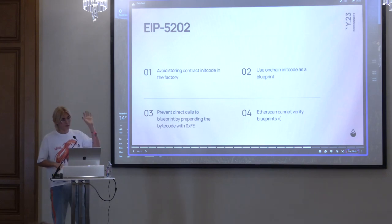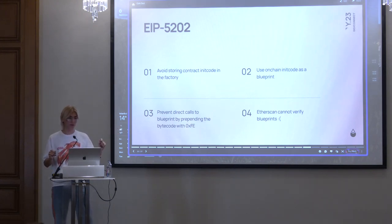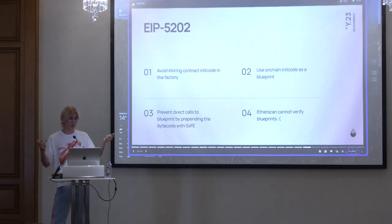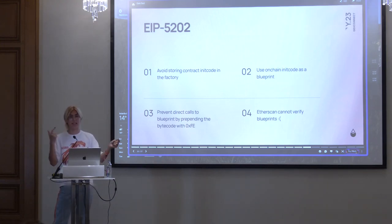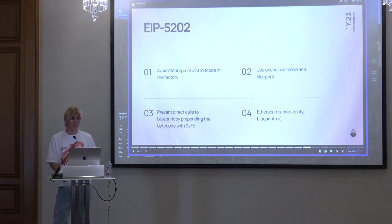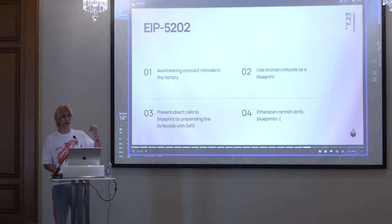The init code has to follow some standard. We chose EIP-5202 because, as far as I was aware, it was the only standard for Vyper blueprints. You deploy this init code on-chain — it's storing the init code on-chain — but you cannot use it as a regular contract because it has the invalid opcode (FE) in the beginning, and any direct calls to the blueprint are reverted. This explicitly tells you it's a template, not a contract — you have to use it as a template to generate new gate seals. Unfortunately, you cannot yet verify EIP-5202 blueprints on Etherscan, though we hope they'll add it soon.